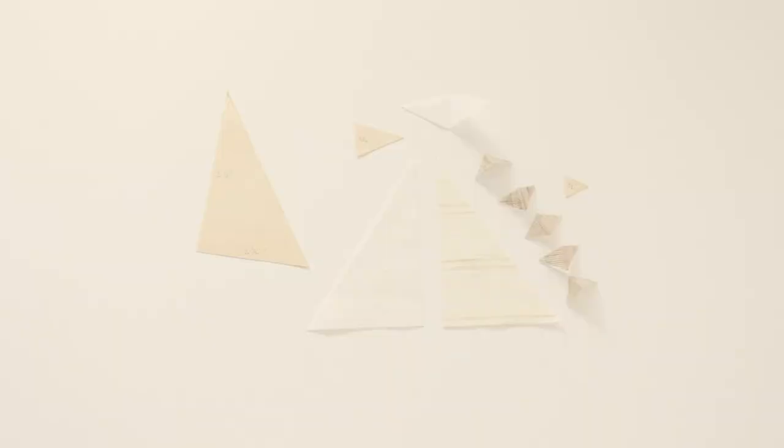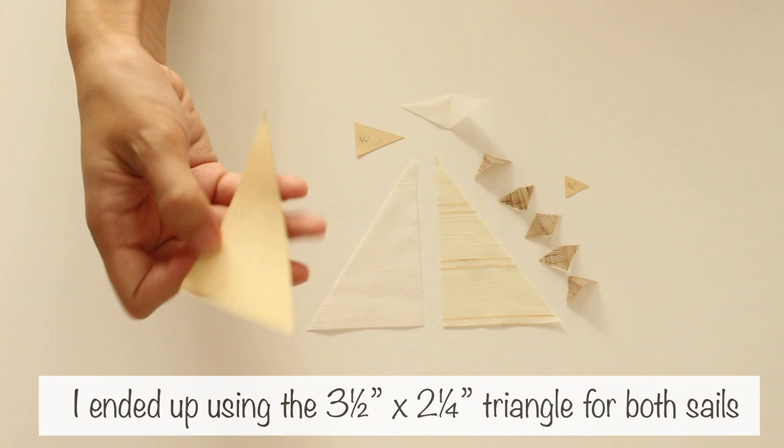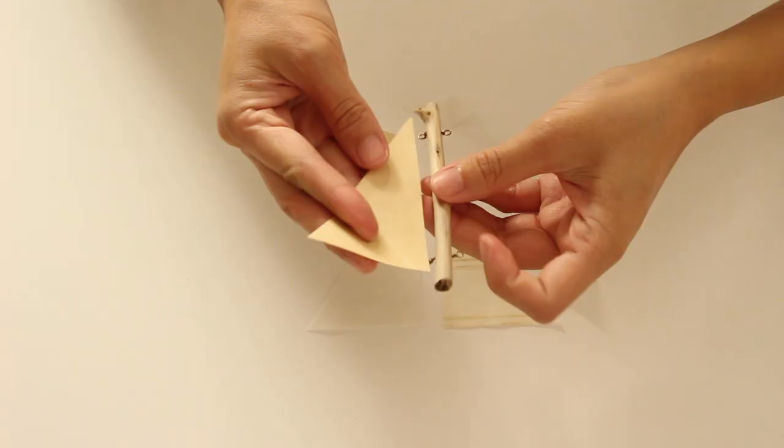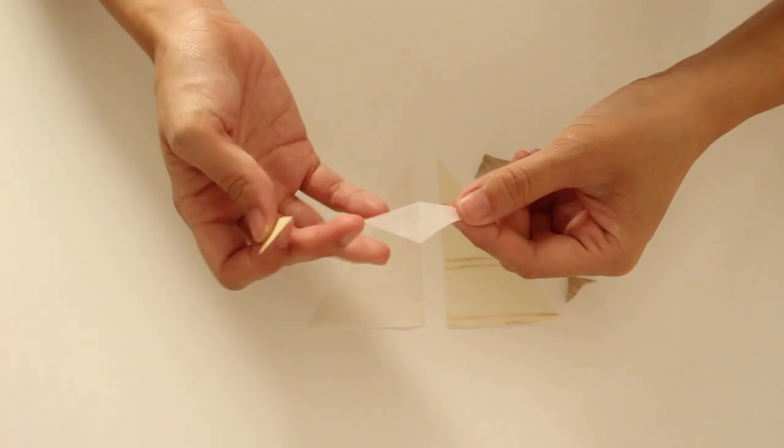Cut your fabric into the shapes of your triangle templates. I folded the fabric before cutting the triangle so it looked like a diamond.